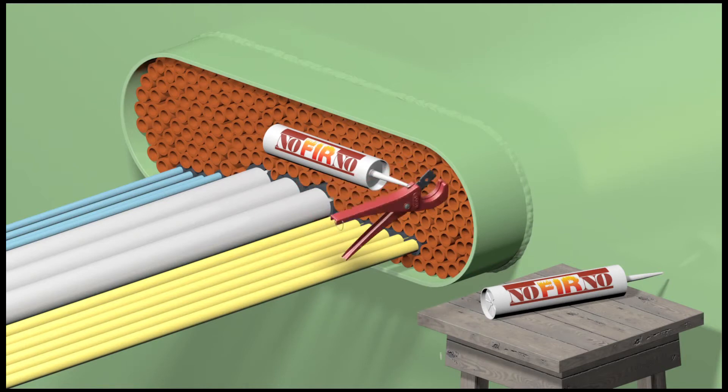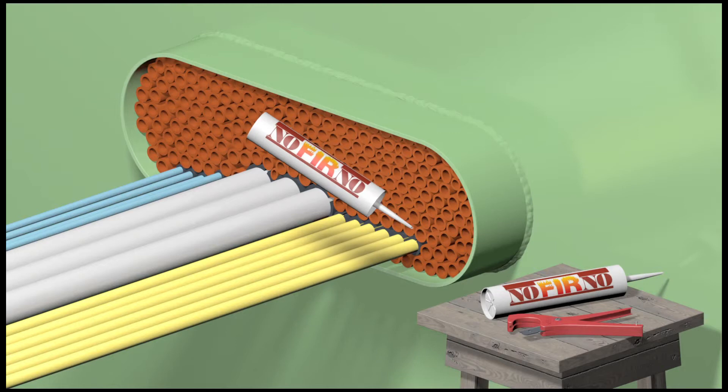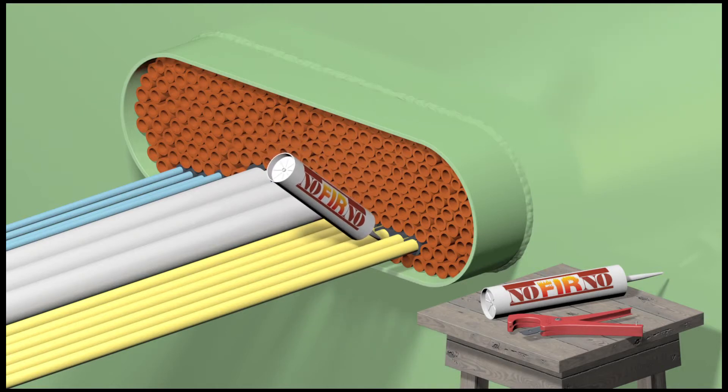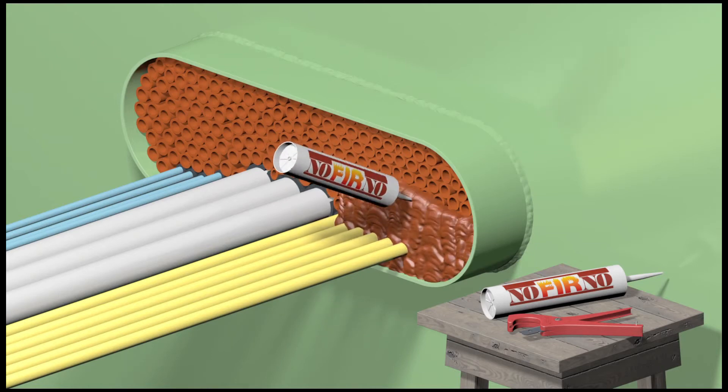Cut the injection nozzles of the cartridges in an angled way to create a medium-sized dispersing opening. This will improve the flow of the sealant between the set of cables.